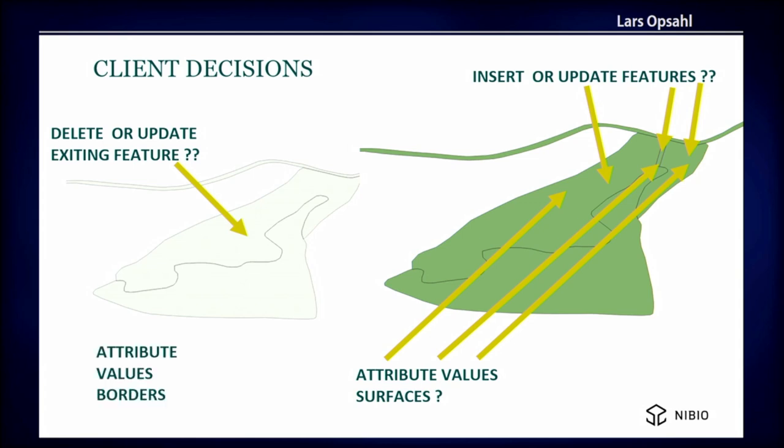What about attribute values and borders? What's actually new here is two lines for the road — actually nothing else. But if you look at the simple feature model, you cannot have attribute values on borders. Well, you can, but you have to have the same value for all the borders for that surface. In this case the road actually contains two new borders and two old borders. Attribute values on borders is not possible with simple feature.